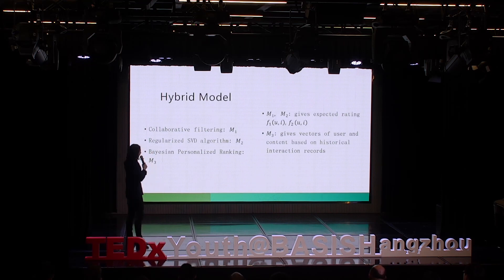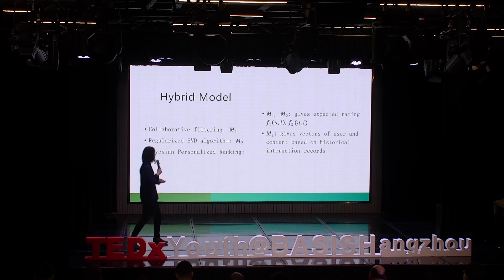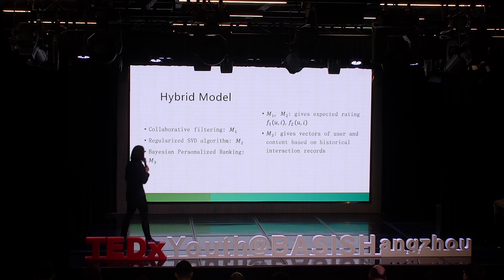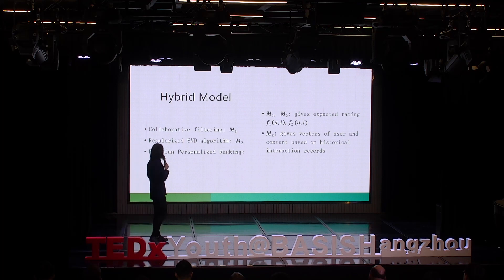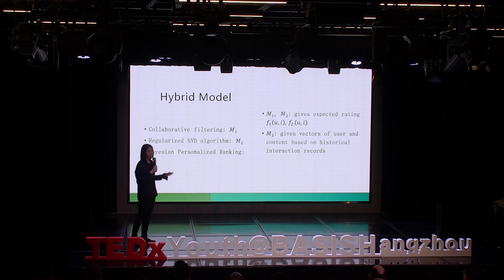After analyzing those different modalities of information, we can combine and fuse them together in a neural network. Besides that, we also use a hybrid model that deals with different algorithms, combining them to make each algorithm work together for the optimal outcome.